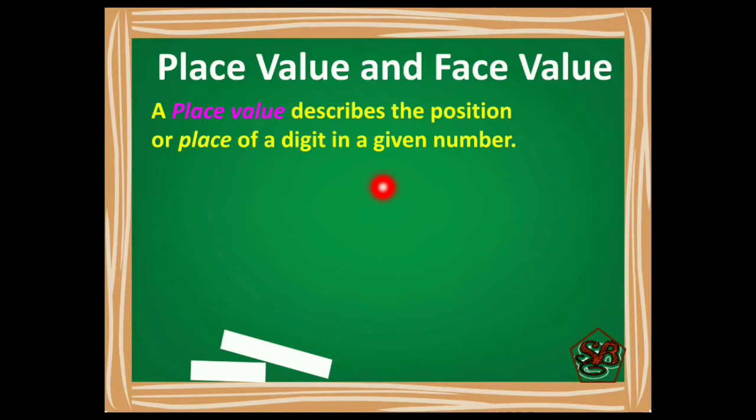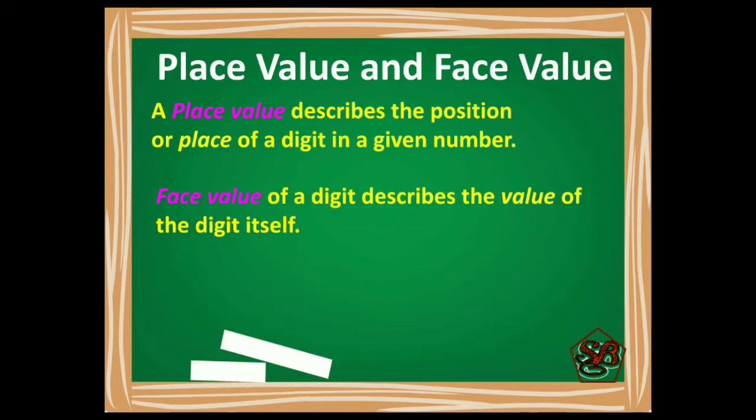Let's understand what is place value. A place value describes the position or place of a digit in a given number. And a face value of a digit describes the value of the digit itself.